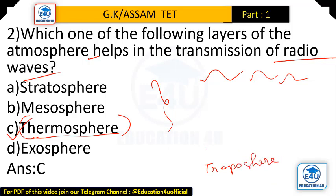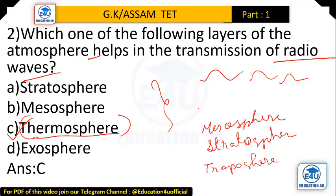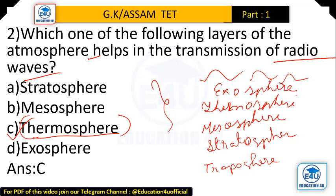Next question: which one of the following layers of the atmosphere helps in the transmission of radio waves? The answer is the thermosphere — the thermosphere helps in the transmission of radio waves.